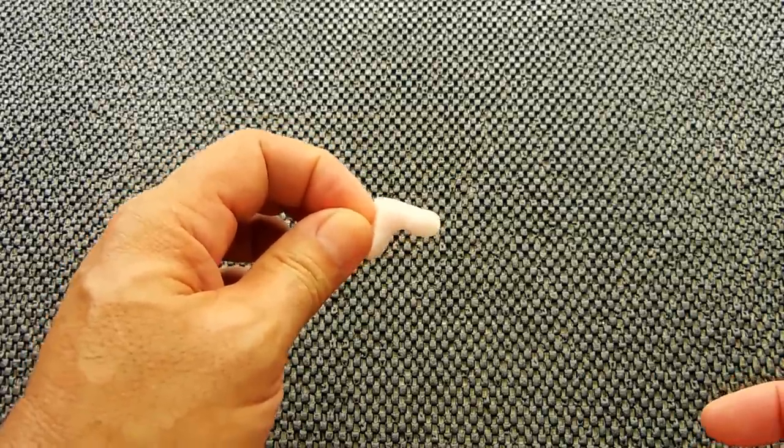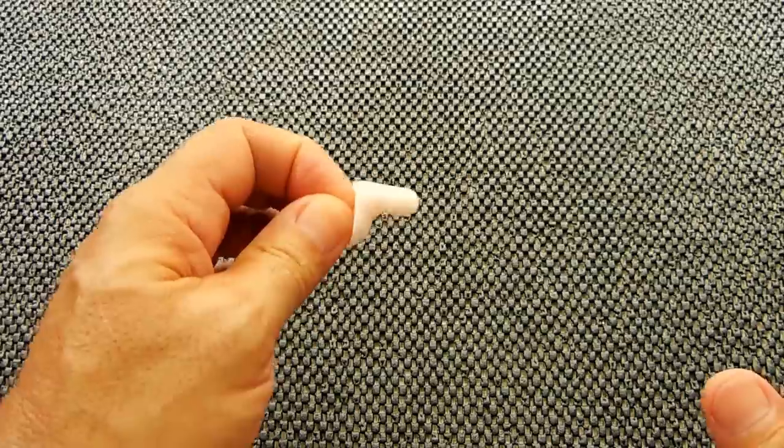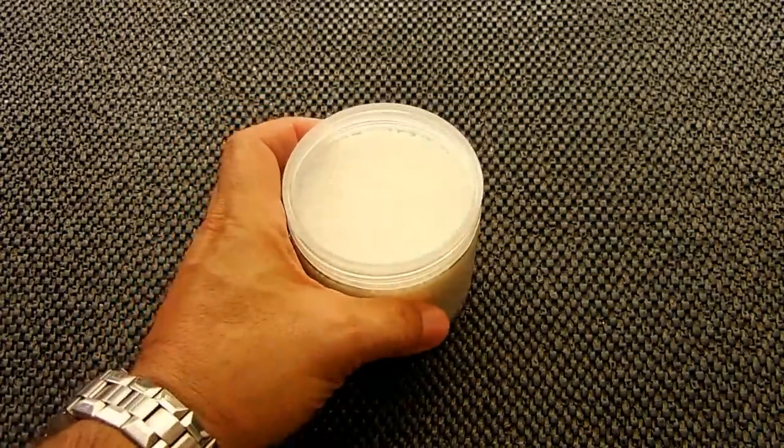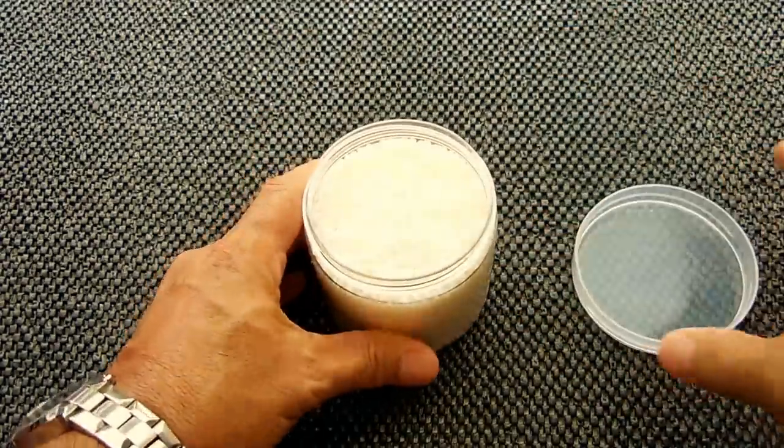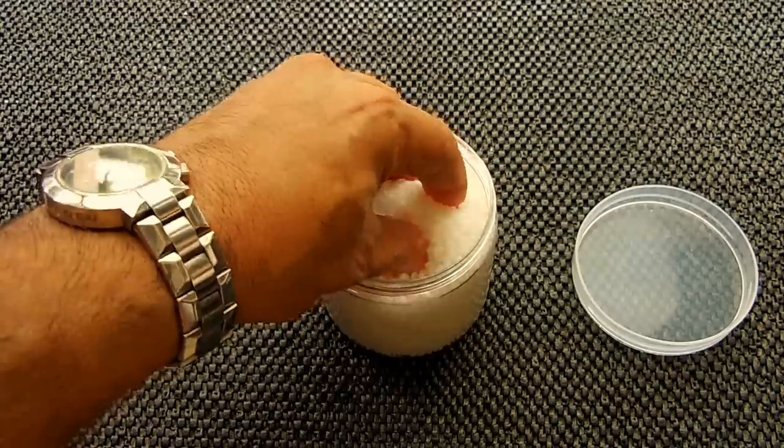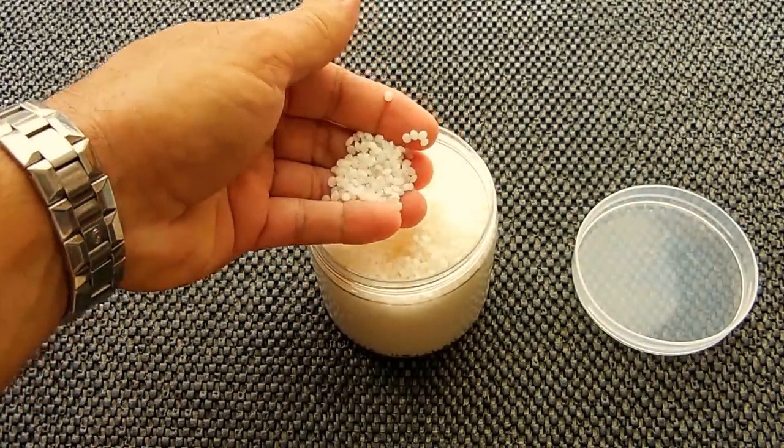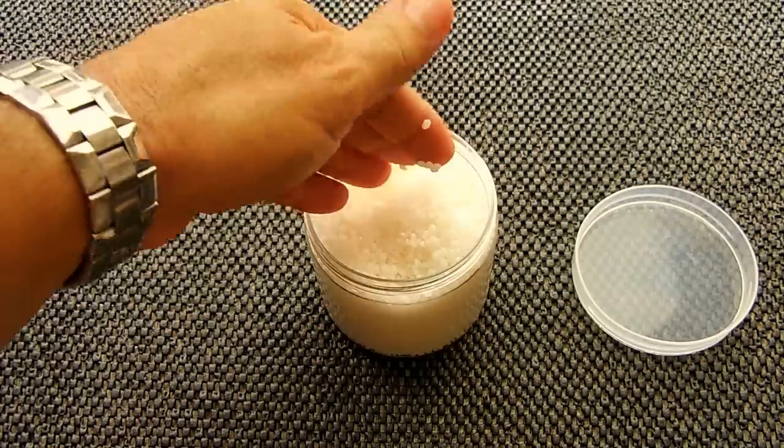Let me show you how easy these are to make. There is more than one way to make these. The first thing you're going to require is something called polymorph. Polymorph is really cool stuff—it's all these little pellets that are very hard plastic.